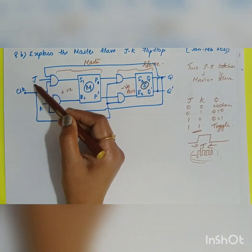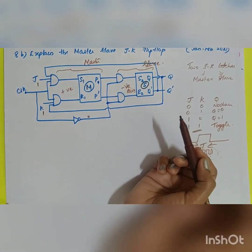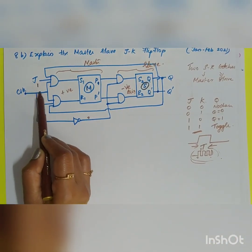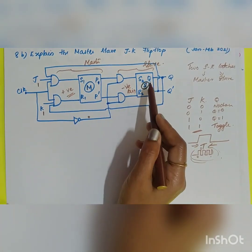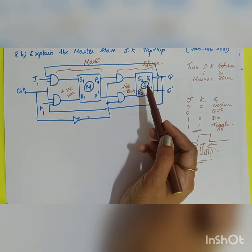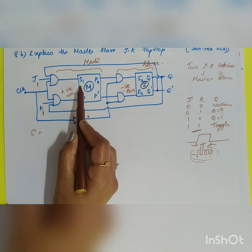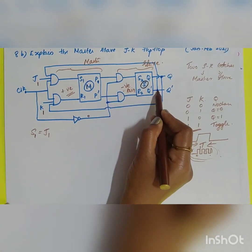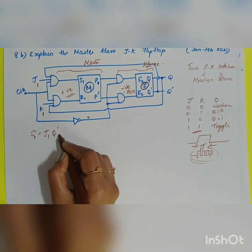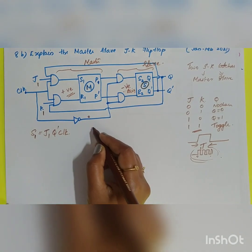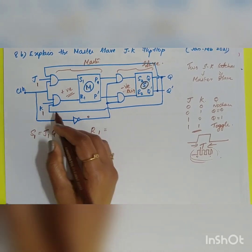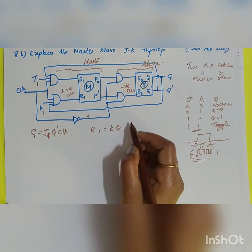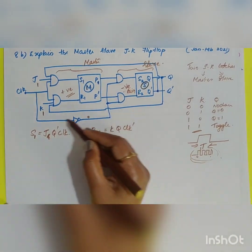We focus on the condition where J=1 and K=1. In the diagram of the master-slave JK flip-flop, the master operates during the positive edge and the slave operates during the negative edge of the clock pulse. The expression for S1 is: S1 = J · Q̄ · Clock. Similarly, R1 = K · Q · Clock.